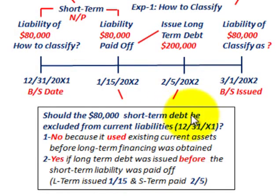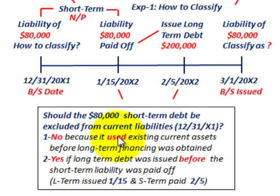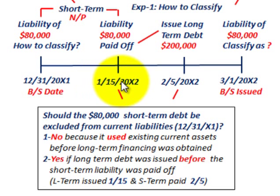Should the $80,000 of short-term debt be excluded from current liabilities on the 12-31-20X1 balance sheet when it's issued on 3-1-20X2? The answer is no, because it used existing current assets before the long-term financing was obtained. We paid it off before the long-term financing was obtained, using existing current assets. So it should not be excluded as a current liability — it is included as a current liability because it was paid off with current assets.